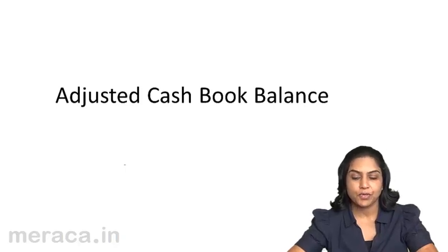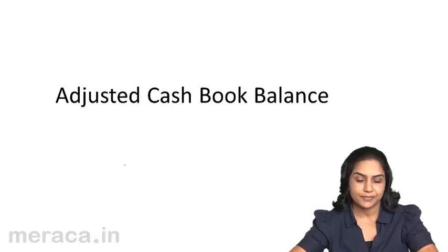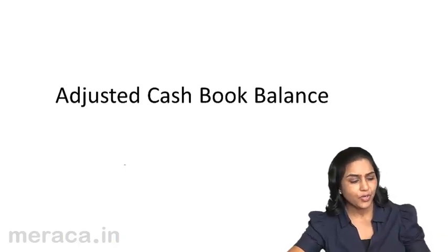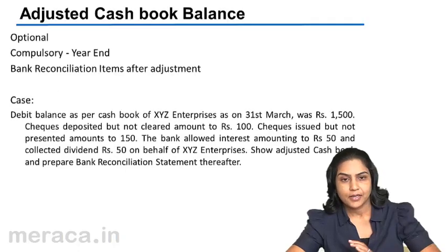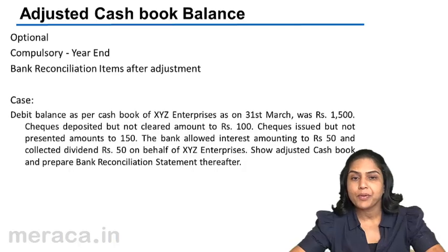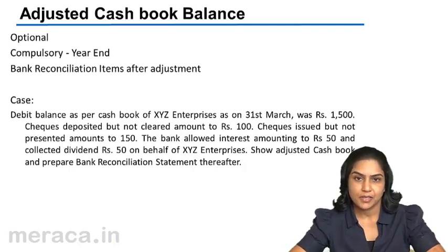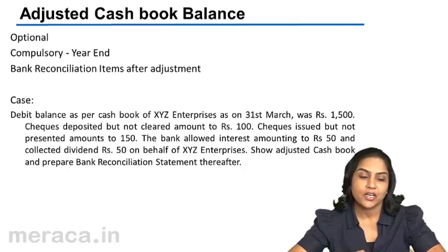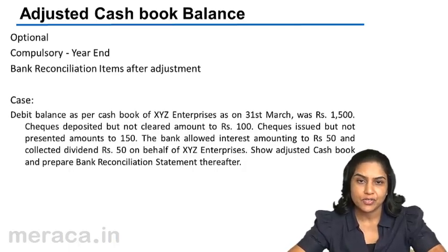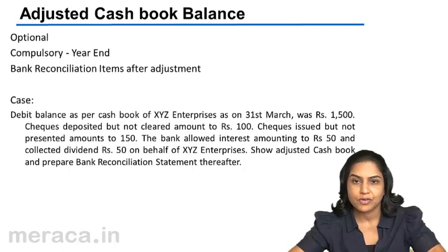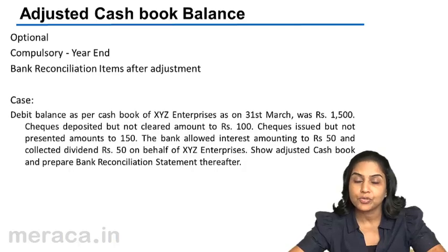Adjusted cash book balance. When we prepare a bank reconciliation statement, we identify the causes of the differences. Now, some of these differences may be due to errors, or due to omissions.